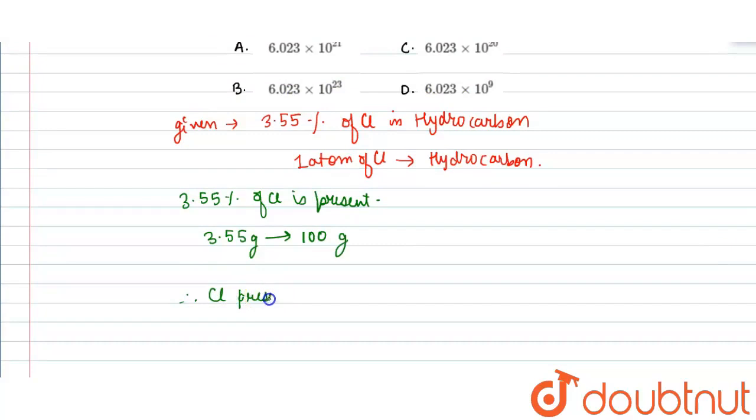Chlorine present in 1 gram would be equals to 1 × 3.55 ÷ 100, which is equals to 3.55 × 10^-2 grams.